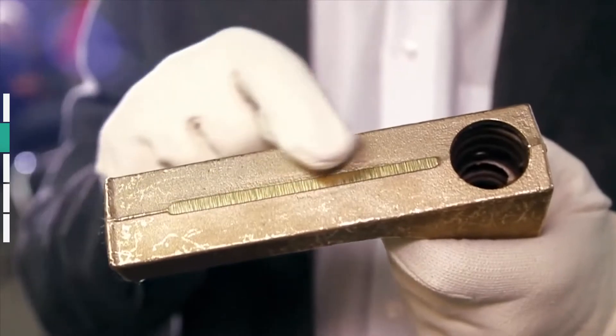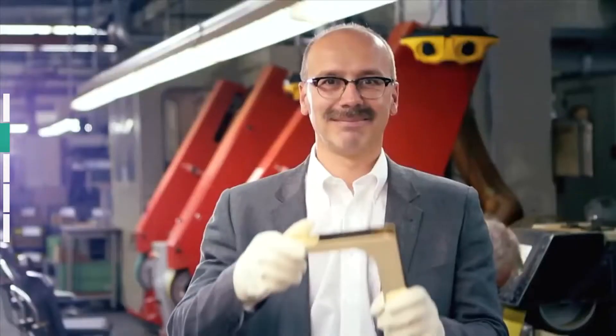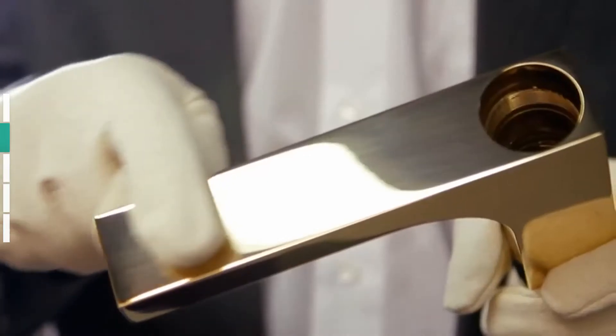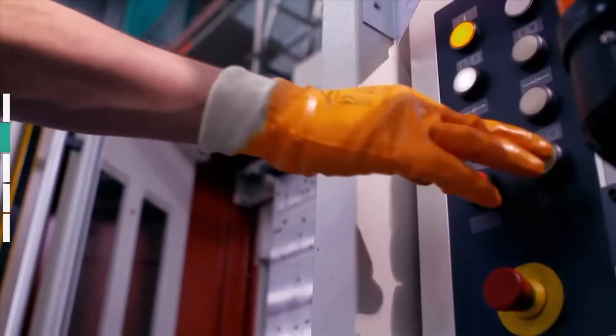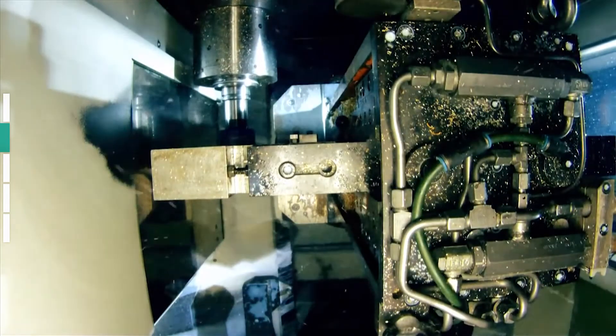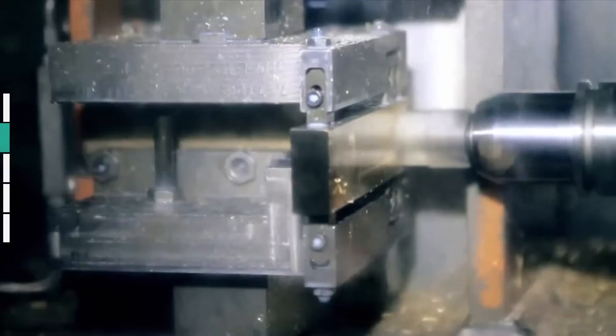During the Hansgrohe surface processing stage, the blank is turned into a shining, polished mixer body. To do this, the molding blank is thoroughly processed and smoothened. What looks somewhat science fiction-like is nothing more than milling and drilling, otherwise known as machining.